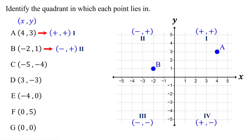Please pause the video and identify which quadrant point C lies in. Both its x and y-coordinates are negative. If both coordinates are negative, the point lies in quadrant three. Therefore, point C lies in quadrant three. If you plot it, you can also confirm that it is in quadrant three.